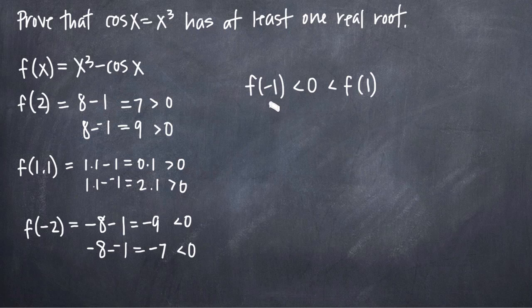And if we look at the intermediate value theorem, we can prove that the graph crosses the x-axis somewhere between negative 1 and positive 1. Remember that the intermediate value theorem basically tells us that if our left endpoint here is negative and our right endpoint here is positive, the intermediate value theorem proves that the graph must attain the value of 0 somewhere between these two points, which means it crosses the x-axis, which means it has a real root at that point there.